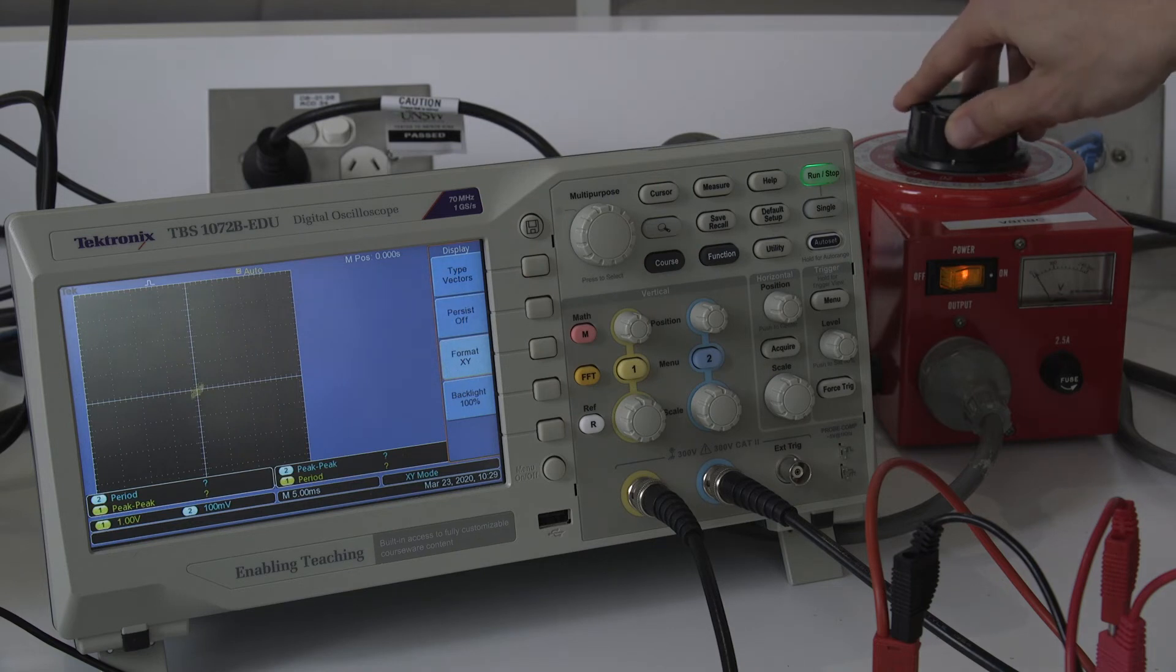If I now increase the voltage, you can start to see a hysteresis loop appearing on the screen. If I further increase the voltage, you'll see at some point it starts to saturate and you start ending up with little lobes on the edge.